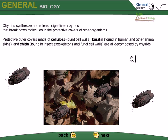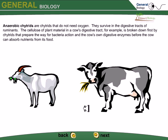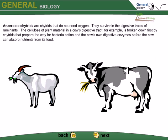Anaerobic chytrids do not need oxygen for their survival and they live in the digestive tracts of ruminants like cows, sheep, and goats. The cellulose of plant material in a cow's digestive tract, for example, is broken down first by the chytrids, which prepare the way for bacterial action and the cow's own digestive enzymes before the cow can absorb nutrients from its food.